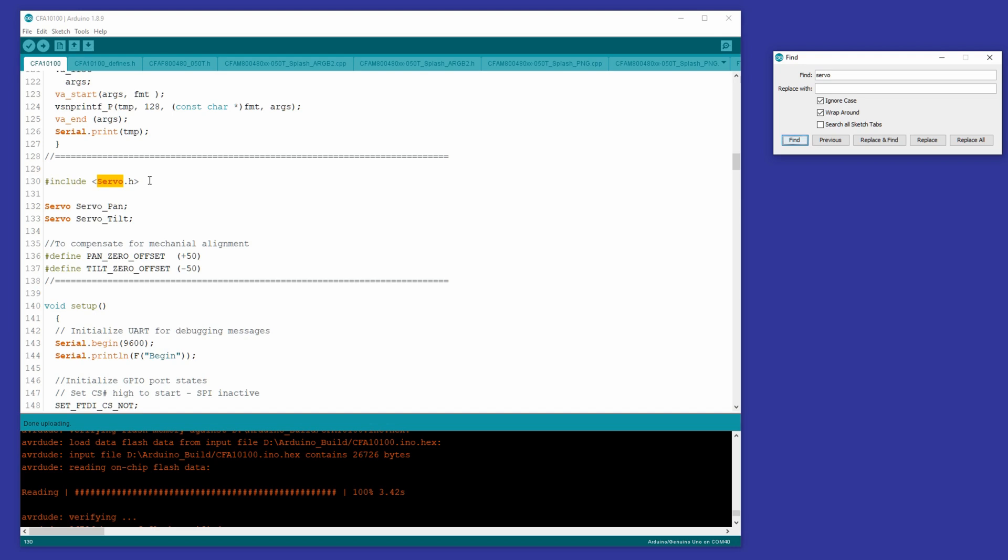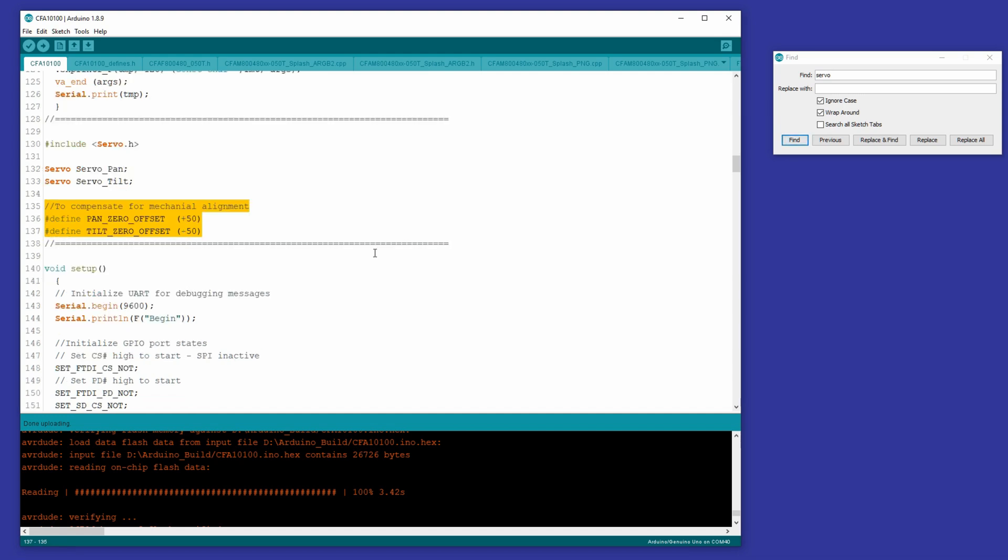So you include servo.h, that brings in the Arduino servo library. We create two instances of a servo, one for pan and one for tilt. I have these little offsets. You can not worry too much about those. Those are just to make the servos aim straight out when we feed 1500 into servo.write microseconds.